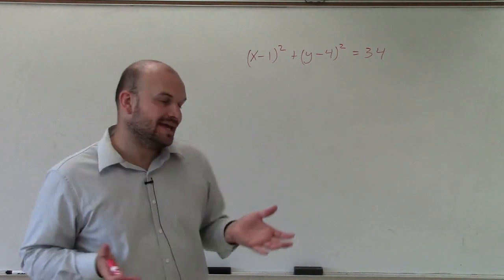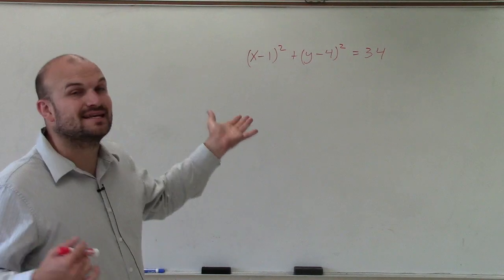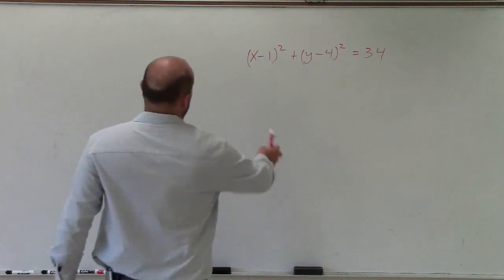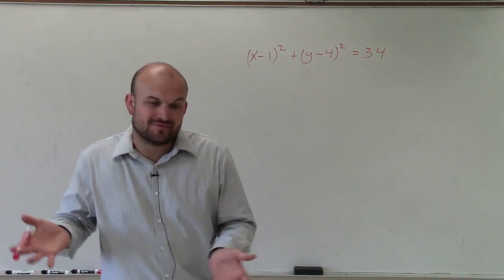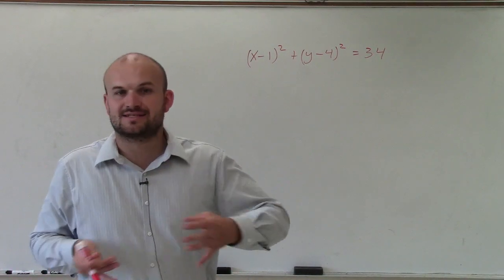One thing I notice about this ellipse is that if I divide and set it equal to 1, the denominators under x and y are going to be exactly the same. So since they're exactly the same, I don't have a major or minor axis.